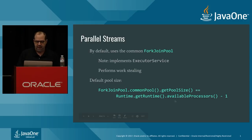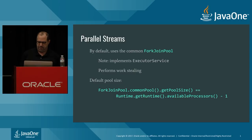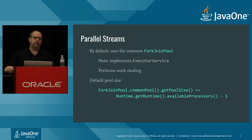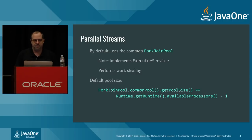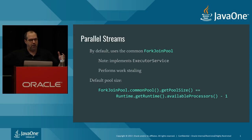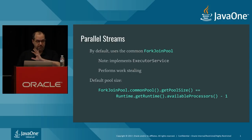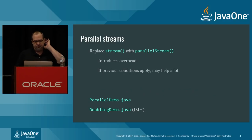The default pool size equals Runtime.getRuntime().availableProcessors() — on my laptop with 8 cores, the common pool size is 7, but main is still operating as well, so work is distributed among all 8 cores. I'll show you how to change the number of threads. I have a class called ParallelDemo to illustrate this.